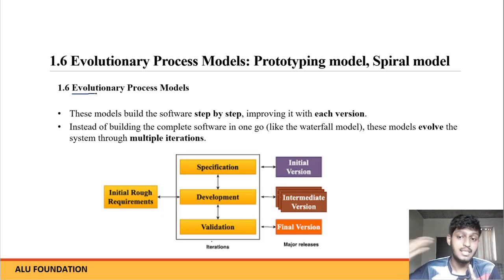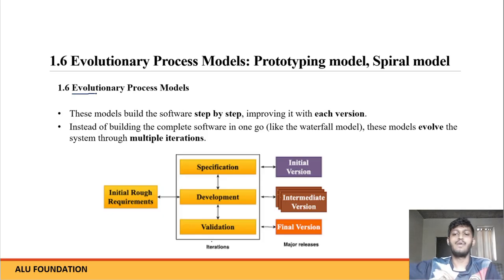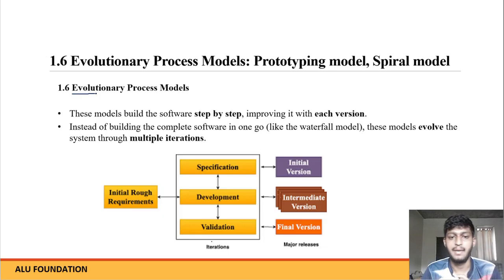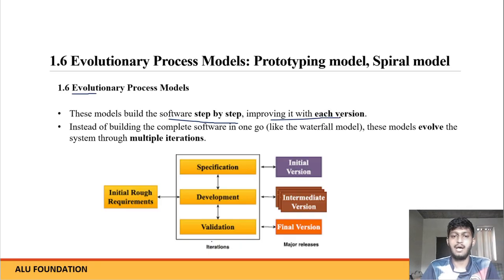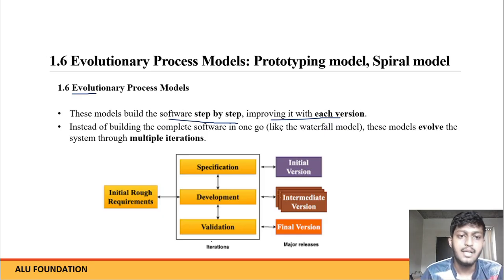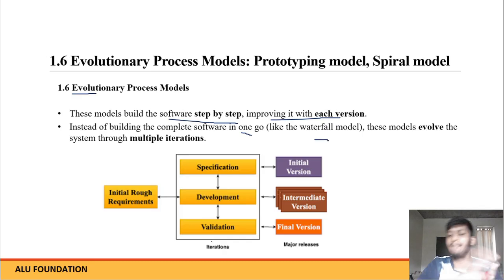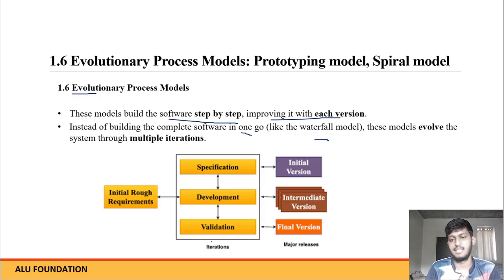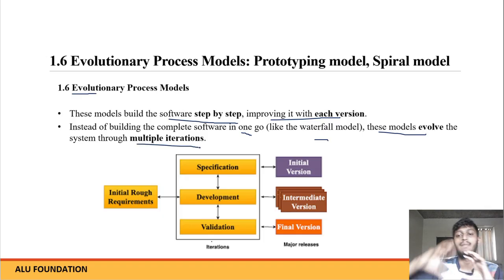Think of evolution — like mobile evolution. In the same way, you also make software step by step. First you make a simple software, then you add new features. This model builds software step-by-step, improving it each version, adding new features instead of building complete software in one go like the waterfall model. This model evolves the system through multiple iterations and multiple versions.